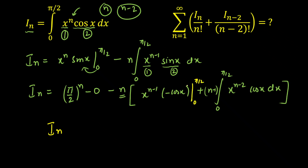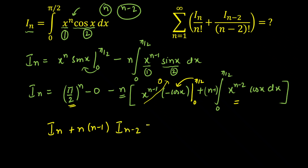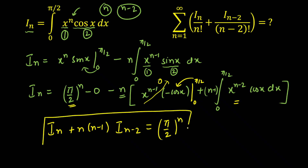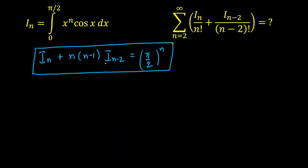Evaluating the middle boundary term: when we put π/2, cos(π/2) = 0; when we put 0, x = 0 — so this integral is 0. We are left with two terms only. Taking –n(n-1) to the other side, we get I(n) + n(n-1)·I(n-2) = (π/2)^n. This is our reduction formula giving the relation between I(n) and I(n-2).